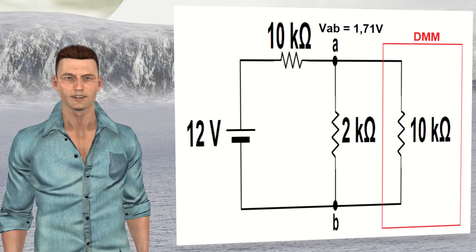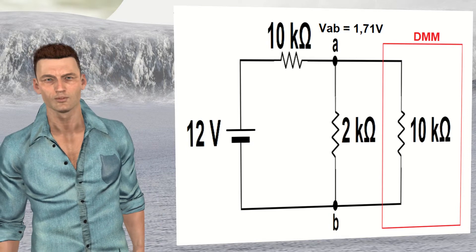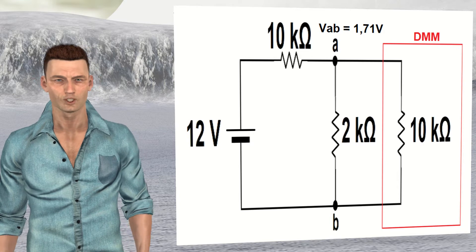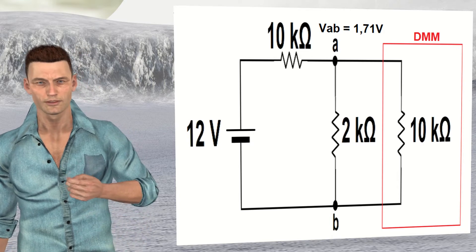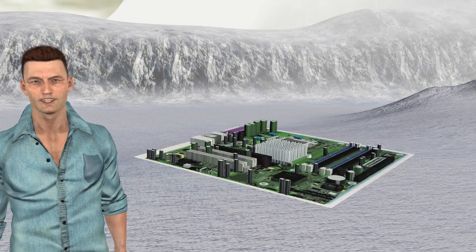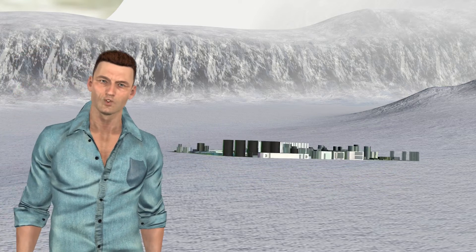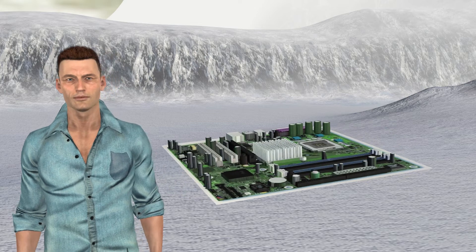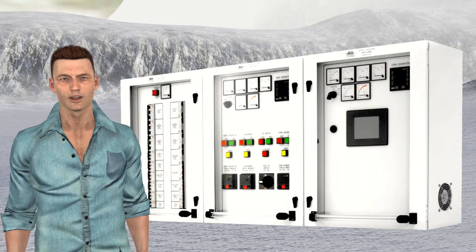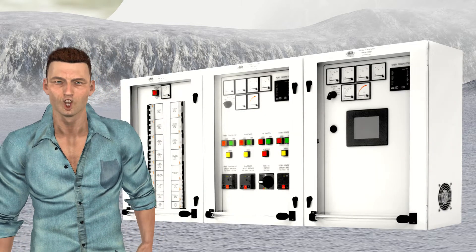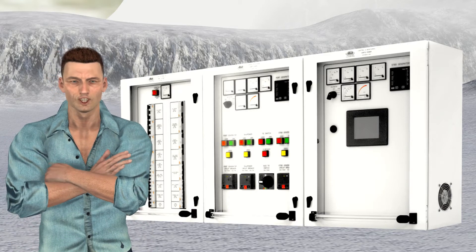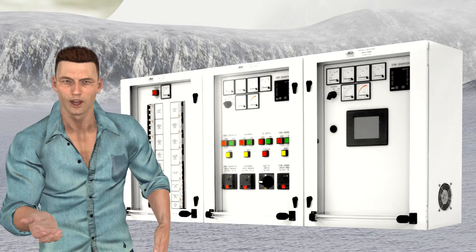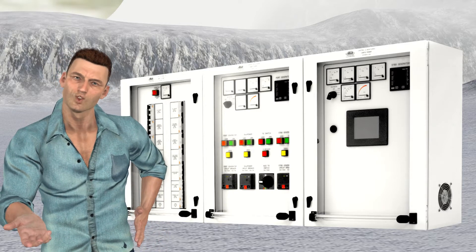We see in this way that the lower the impedance of a multimeter, the greater the impact it has on the circuit, altering the value of the voltage that the circuit has when the voltmeter is not applied. For this reason, in sensitive electronic circuits it is important to use multimeters with a high input impedance to avoid altering the electronic signals. For electrical distribution systems, the effect of using a voltmeter with a low input impedance is negligible — that is the reason why in many electrical distribution cabinets we find analog voltmeters that generally have a low input impedance.